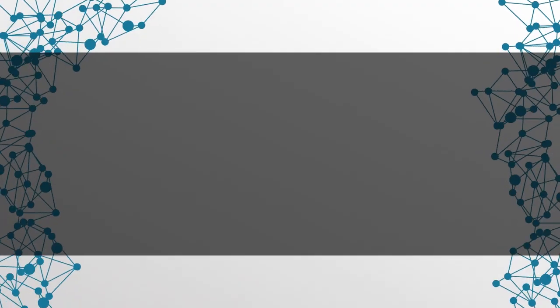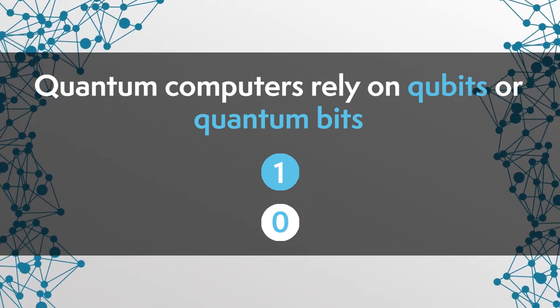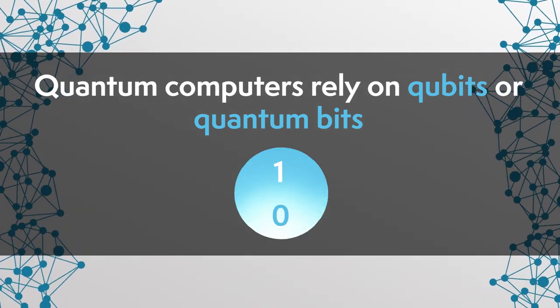Let's start at the very beginning — what is quantum computing? Traditional computers rely on a binary system of information transfer managed by networks of transistors. Bits in a traditional computer can be either 1 or 0, depending on whether the circuit allows electricity to flow through or not. That is, so far, the best and most scalable way of building IT infrastructures. Quantum computers rely on qubits, or quantum bits, that due to the peculiar nature of quantum mechanics can be both 0 and 1 at the same time.